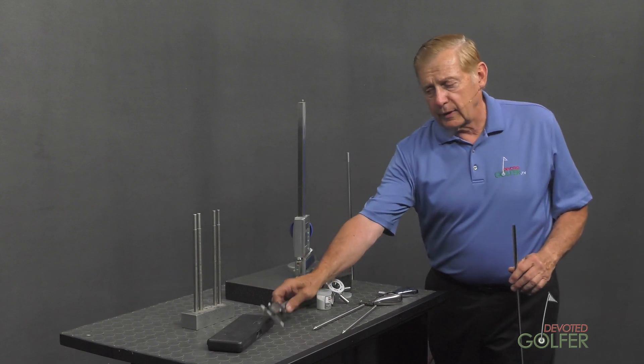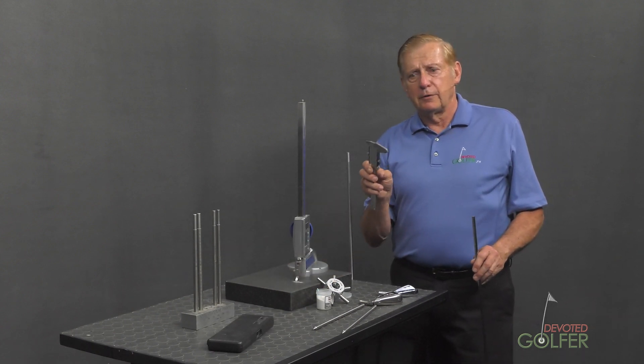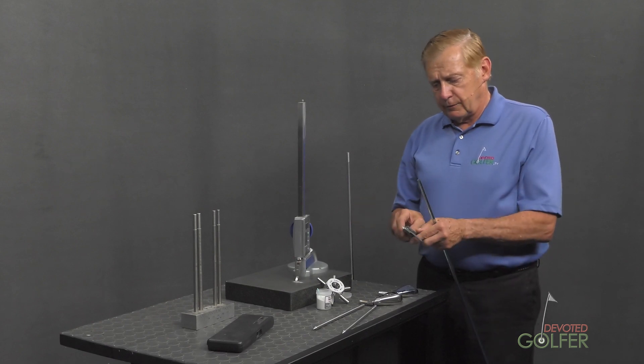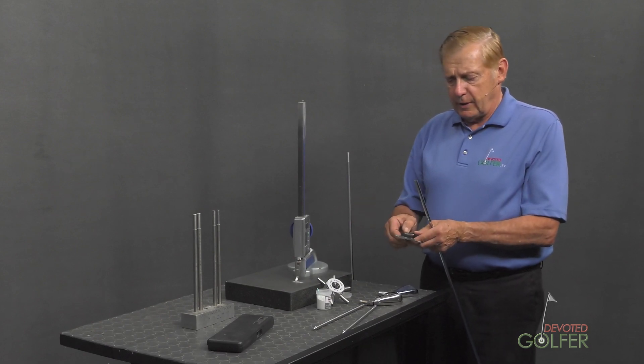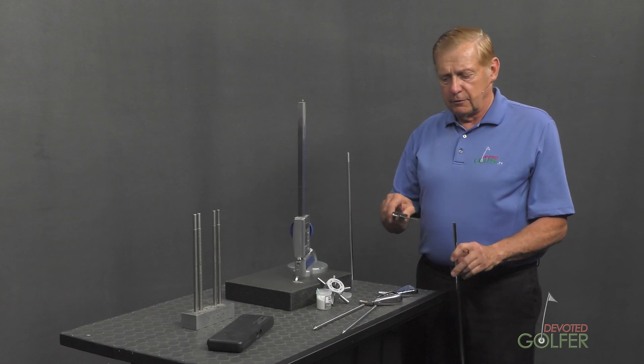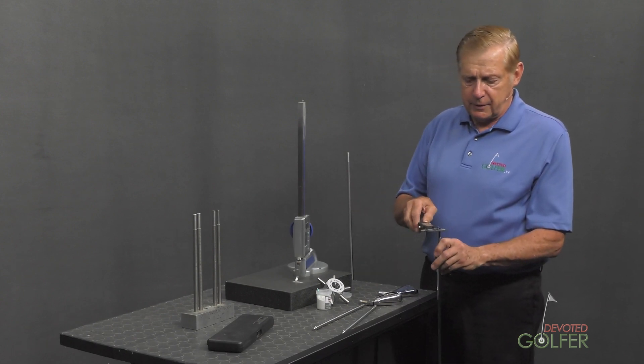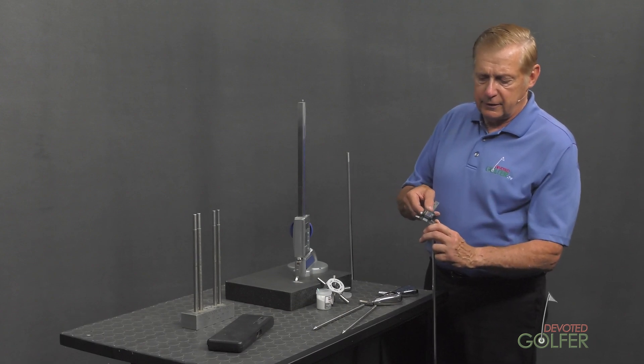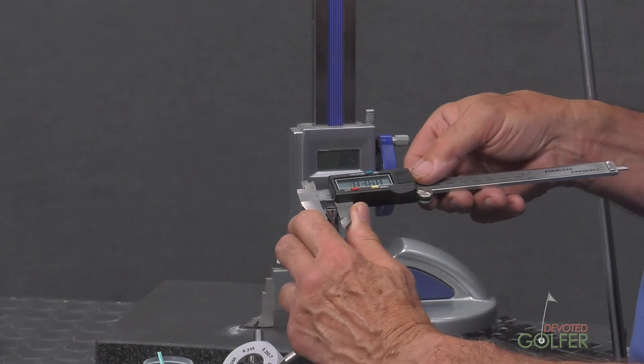Now here's another tool that I use in the shop from time to time. This is a digital caliper. It's useful mostly for measuring shaft tips. If I clamp it on the shaft tip like this and just tighten it up and let it hang, you can see that this is a 0.368 shaft.